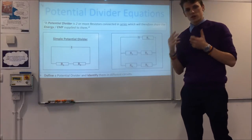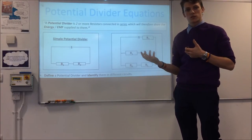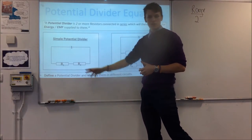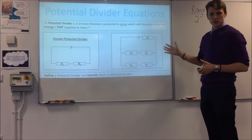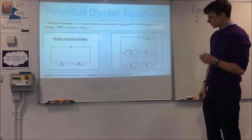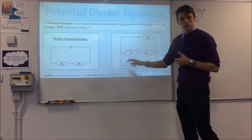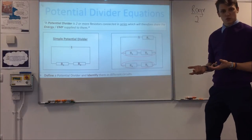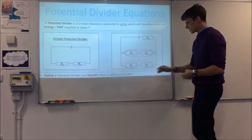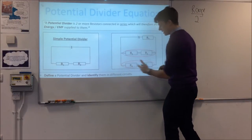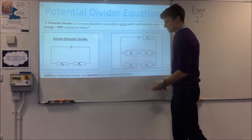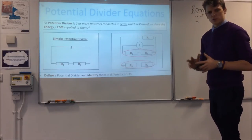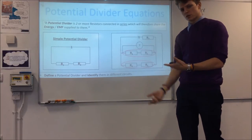The trick with potential divider equations is you first have to spot a potential divider. This one is really easy to see because we've just got two resistors in series, but more often you'll have more complex circuits. For instance, this could be a potential divider, but you'd need to work out what the potential difference is across those two resistances first. Likewise, this one could be a potential divider, but again you'd need to know what the potential difference was here to apply your potential divider equations.